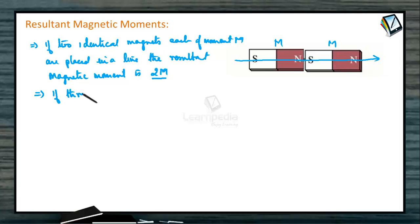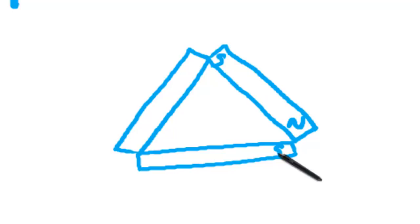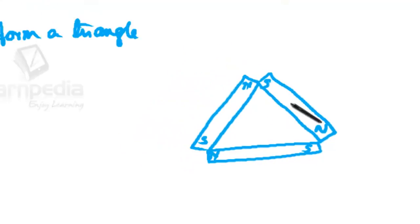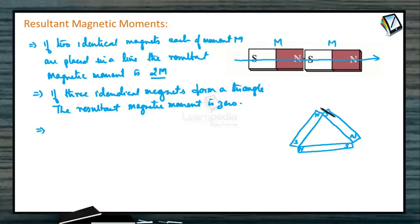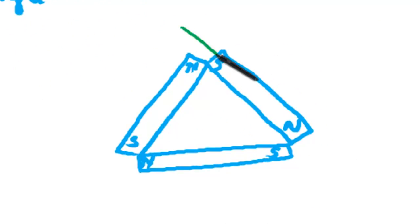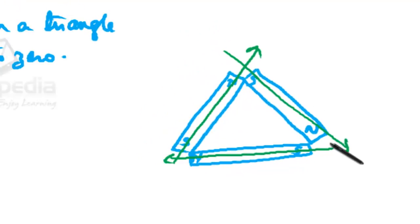If we have three identical magnets joined forming a triangle with unlike poles facing each other at each corner — north pole, south pole, south pole, north pole, south pole, north pole — the resultant magnetic moment is 0. The magnetic moment of one side goes from south to north, and when all three directions are combined, the resultant magnetic moment equals 0.